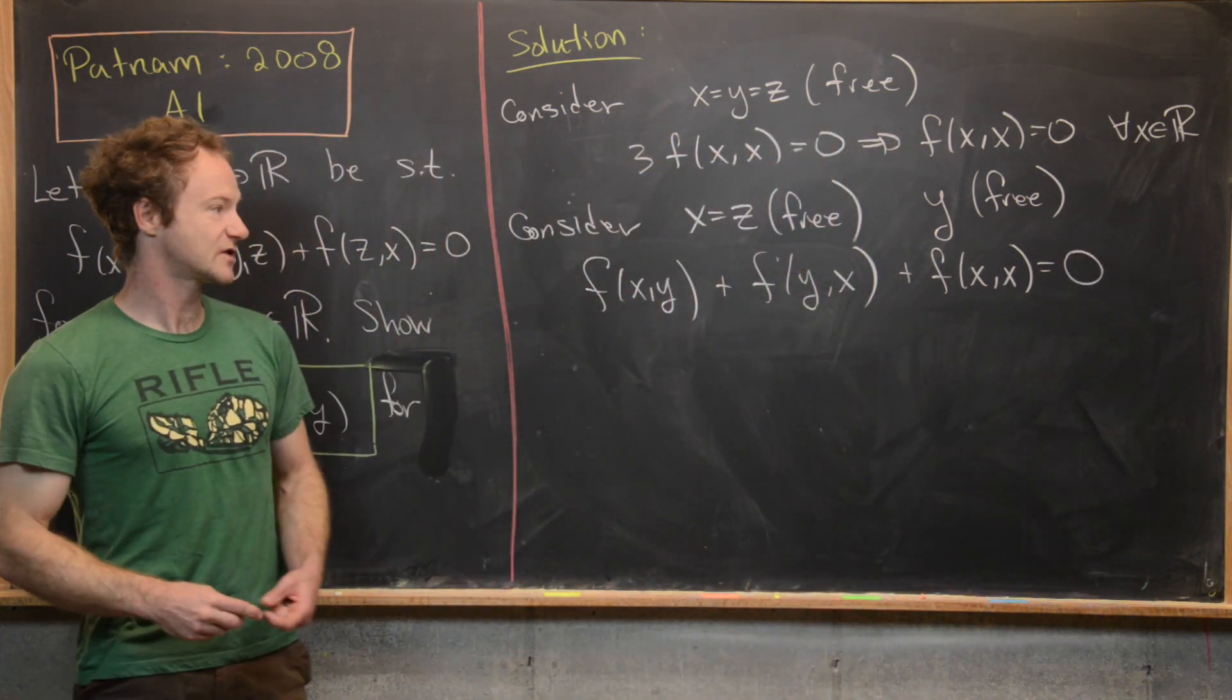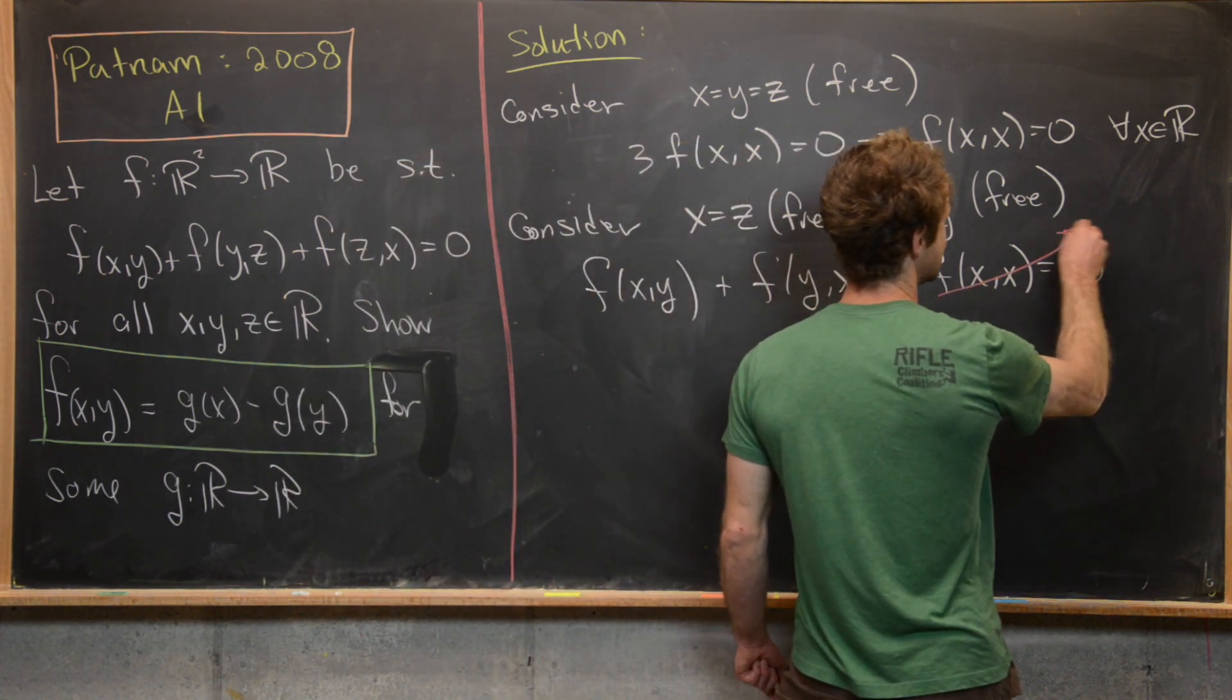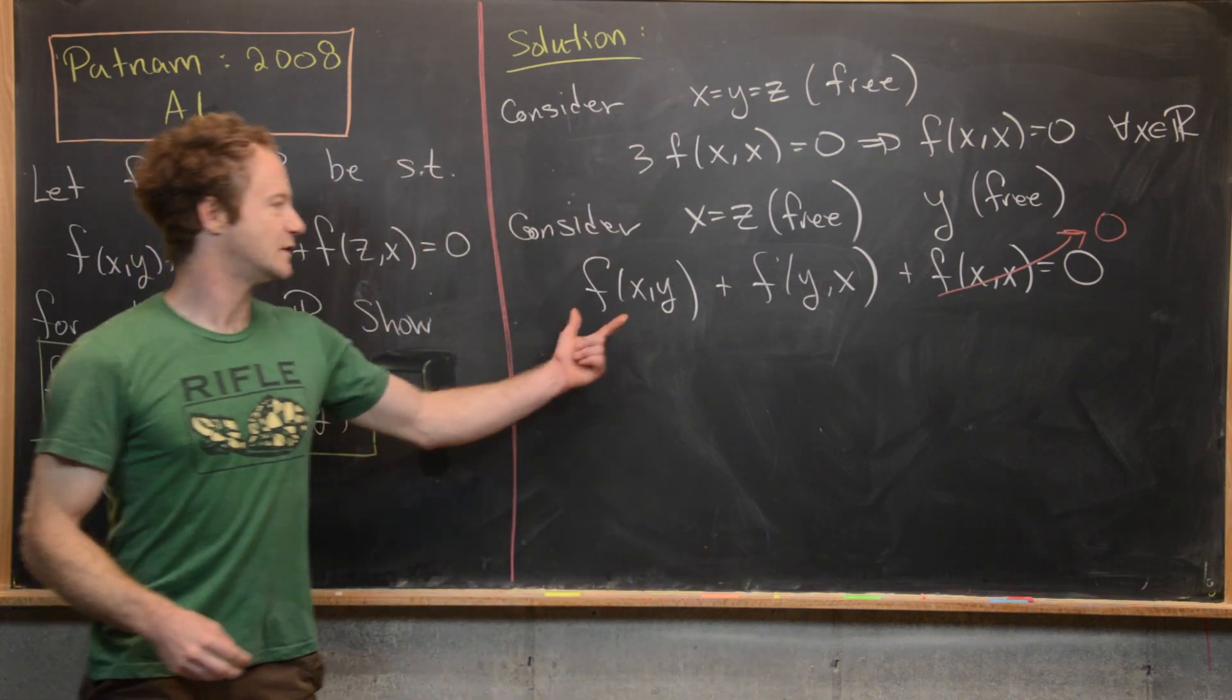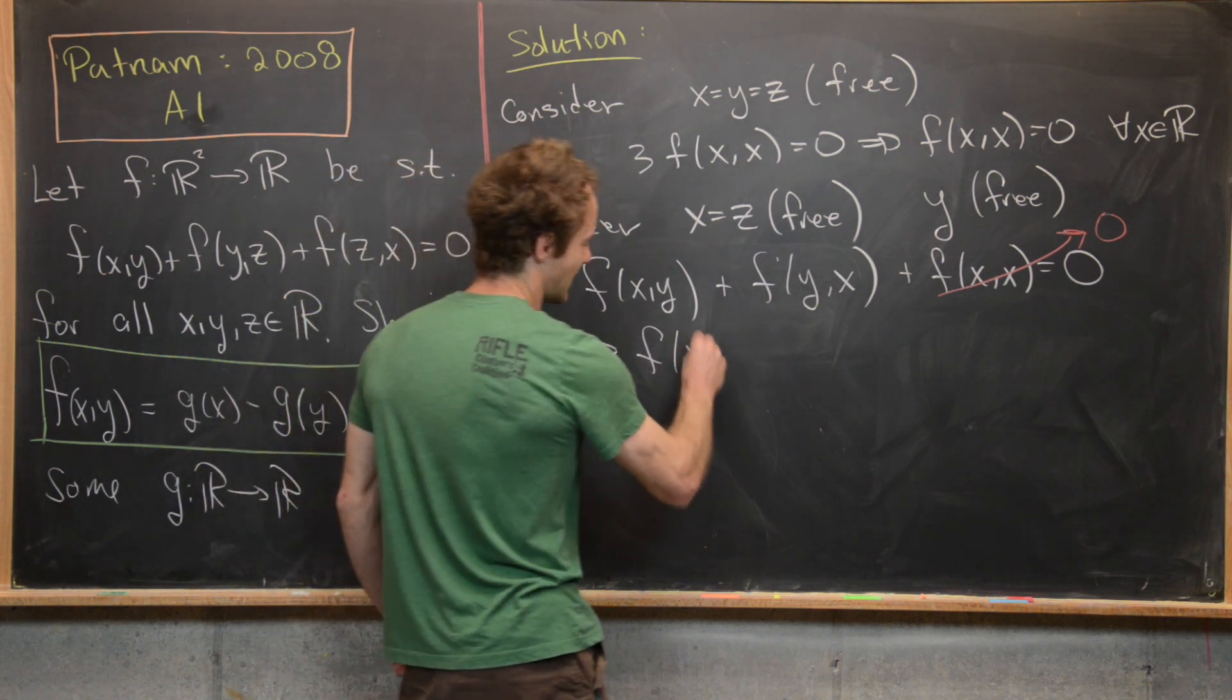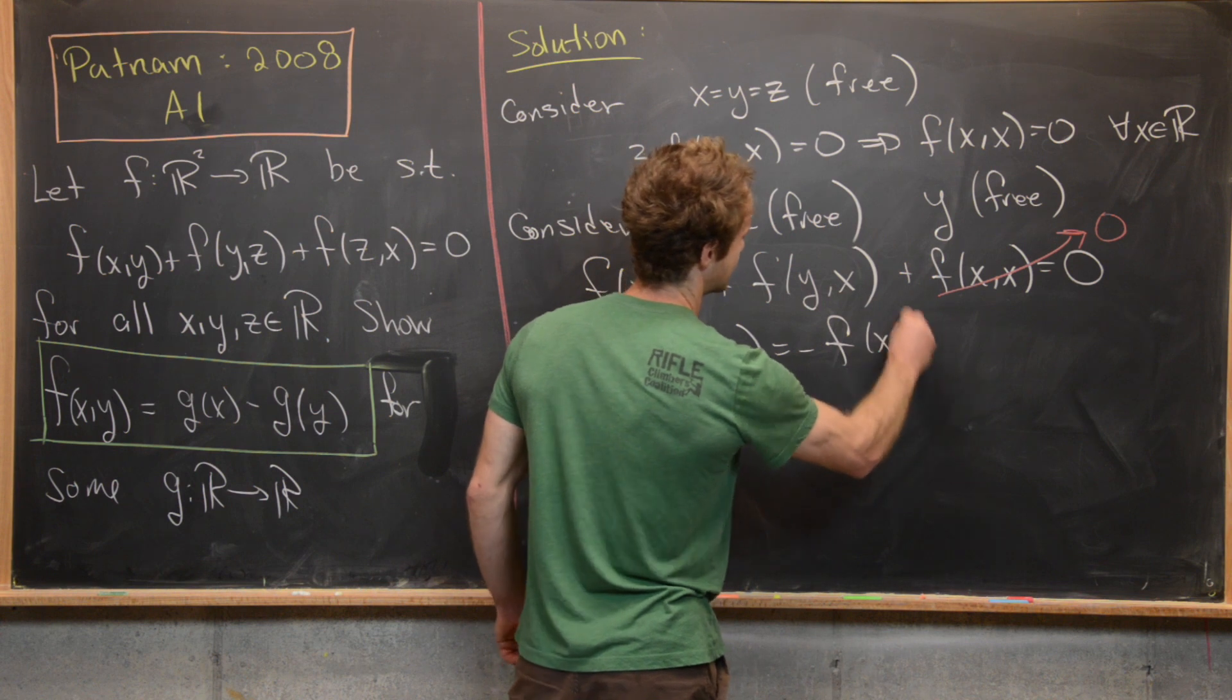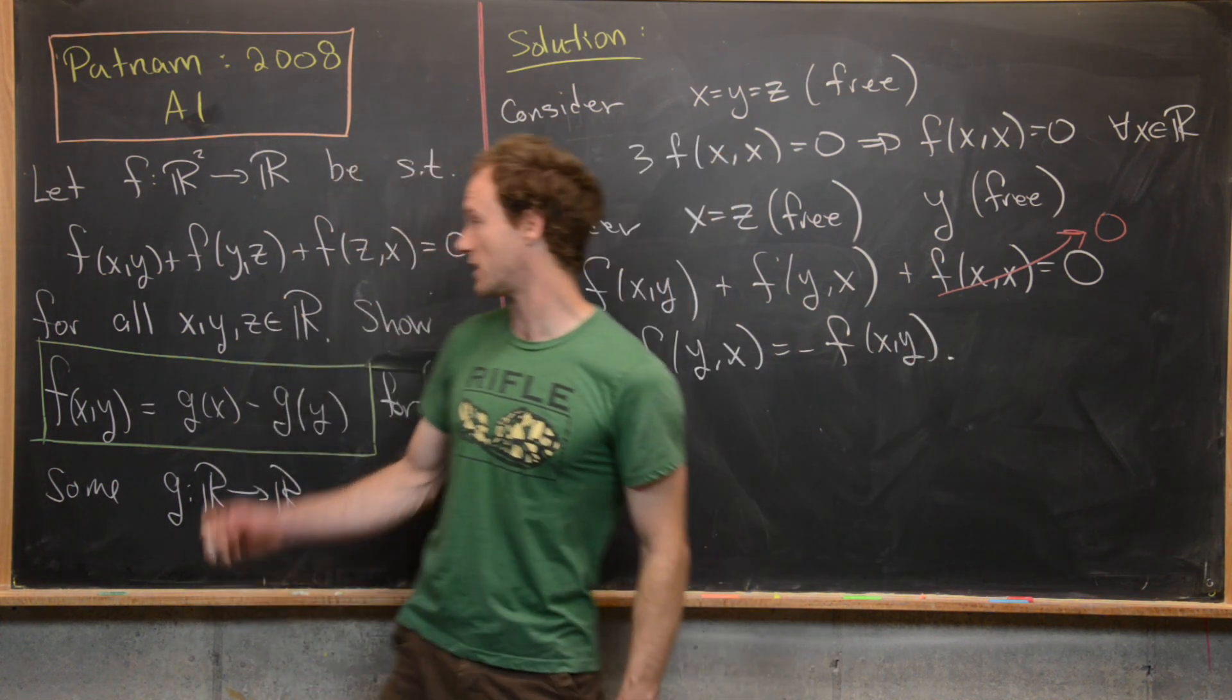But notice from this first thing that we calculated, we see that f(x,x) is equal to zero. So that means we can get rid of that part right there. And we've got this nice antisymmetry built into this function. So in fact, notice that we have f(y,x) = -f(x,y). So now we've got all of the parts available to us to finish it off.